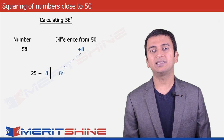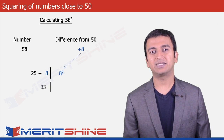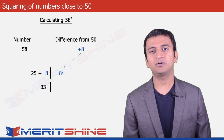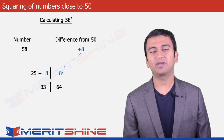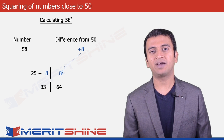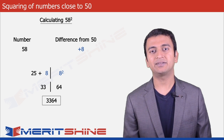So in our case the first part would be 25 plus 8, which is 33, and the second part would be 8 squared which is 64. So we can club these two and get our final answer as 3364.